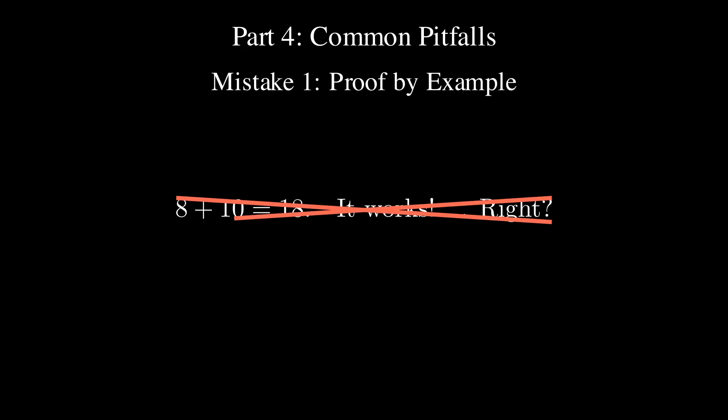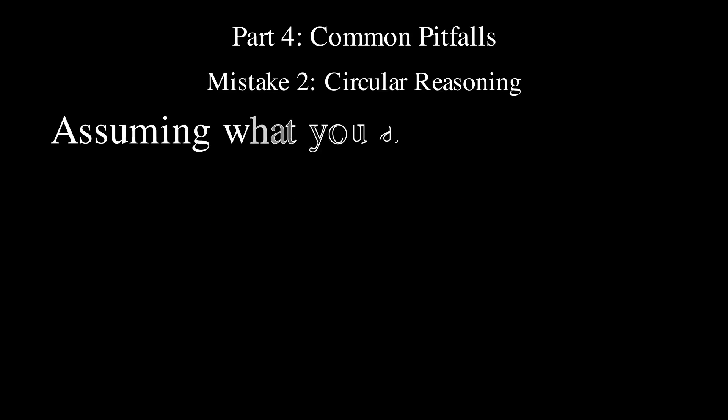Examples are not proofs. Another common error is circular reasoning. That's when you actually assume true what you're trying to prove true. That would be like saying the sum of an even number is 2k in our setup earlier. You can't start with the conclusion.